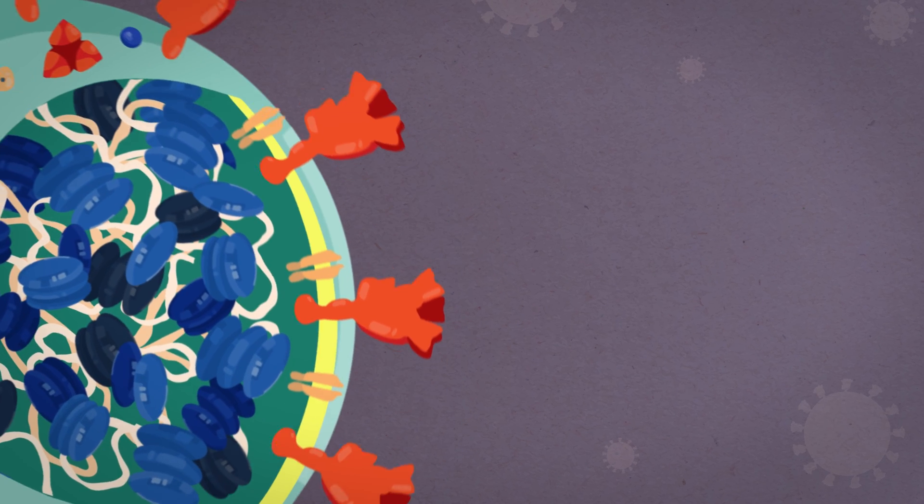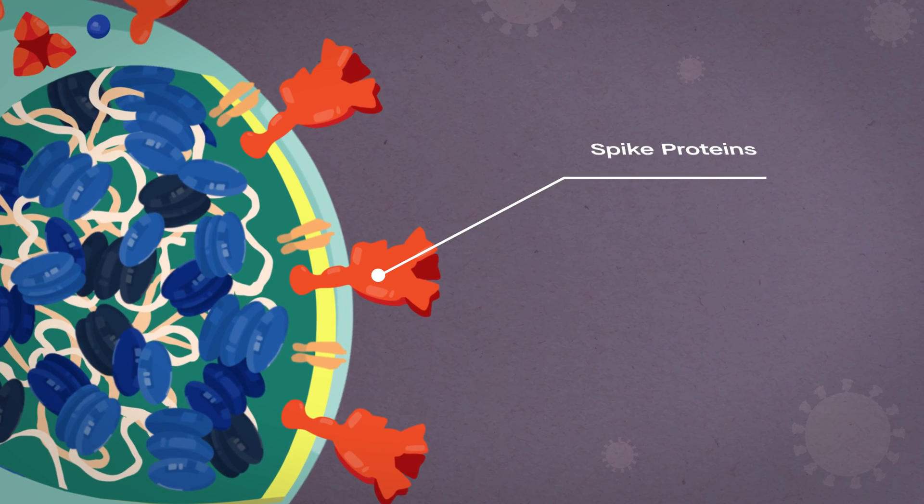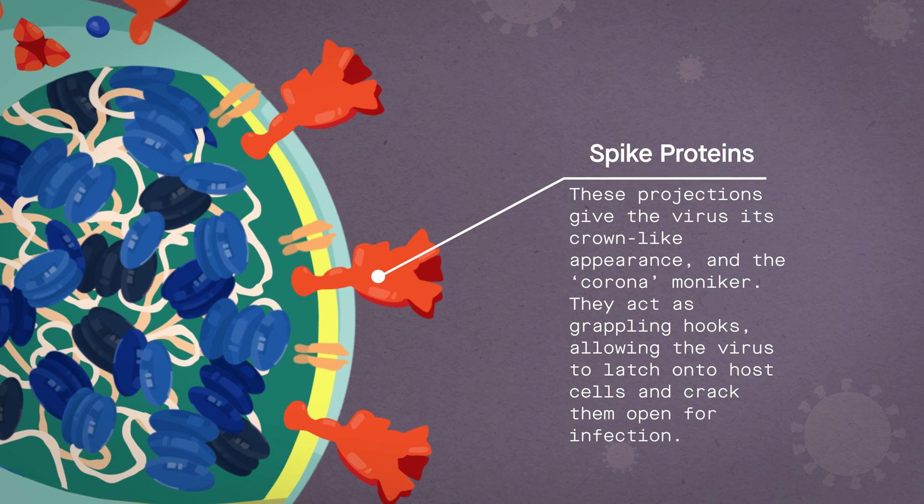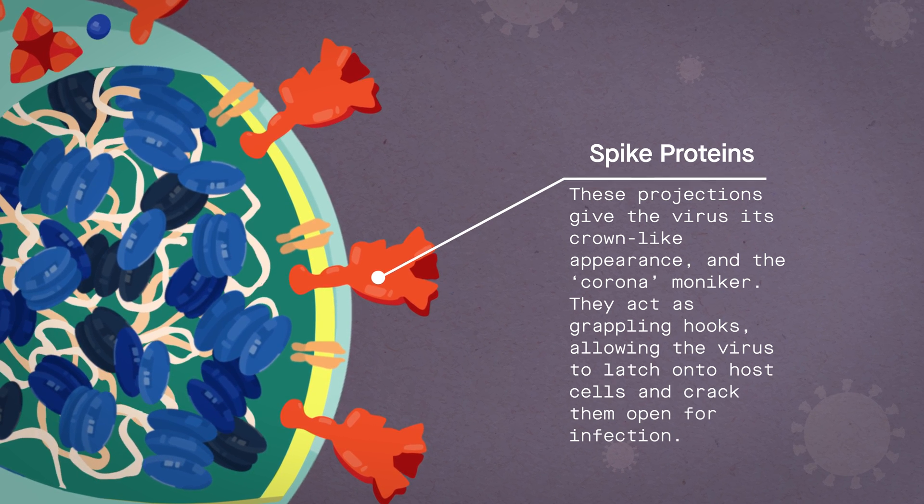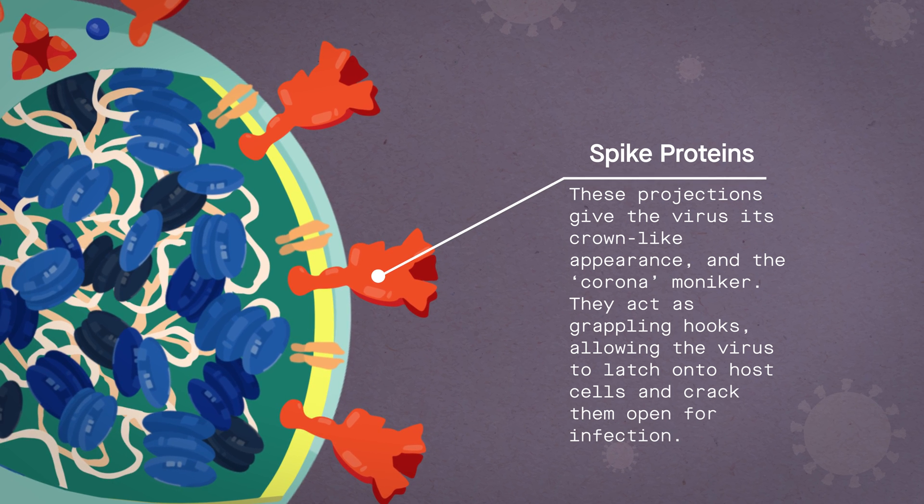The bulbous projections seen on the outside of the coronavirus are spike proteins. This fringe of proteins gives the virus its crown or halo-like appearance under the microscope from which the name corona is derived.